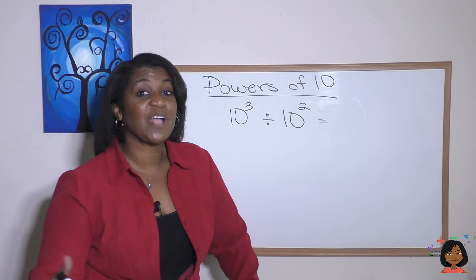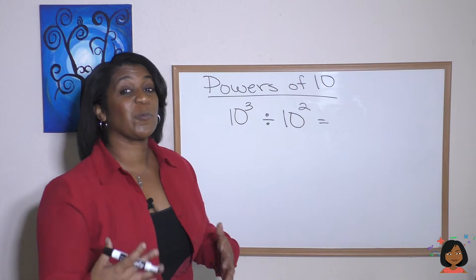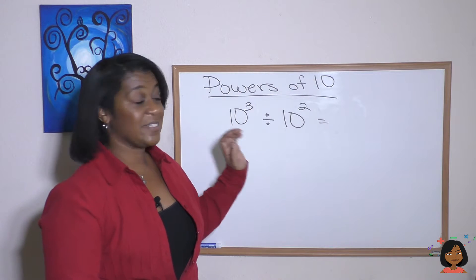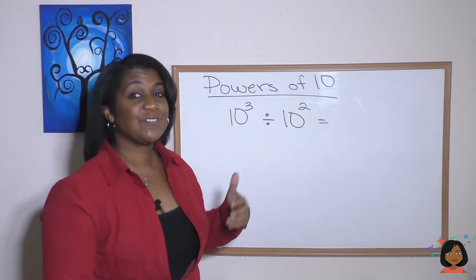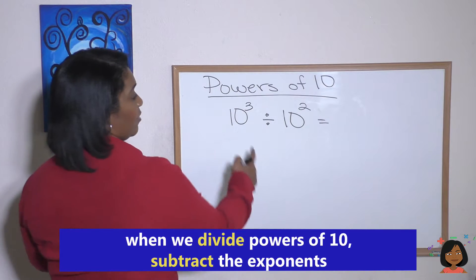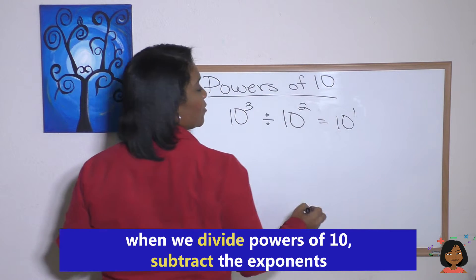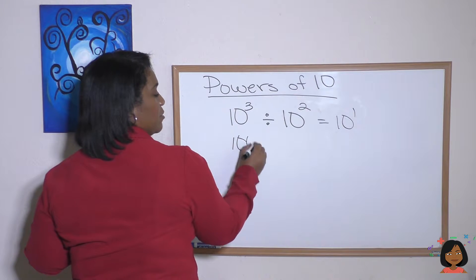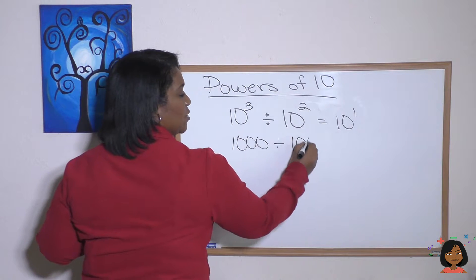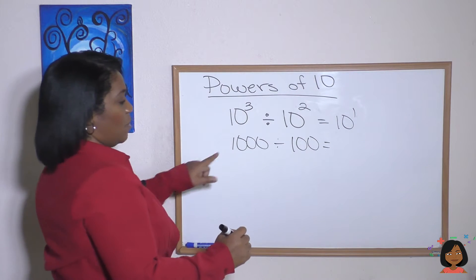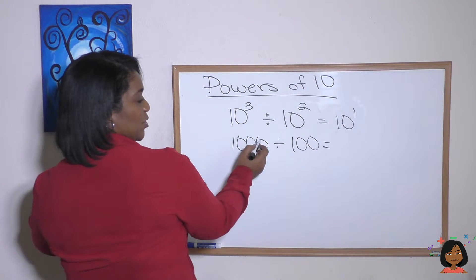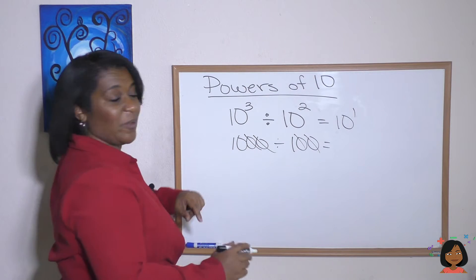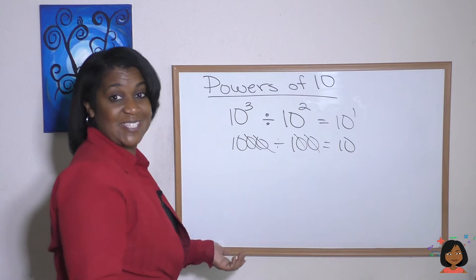It only makes sense that a similar kind of thinking would work for when we're dividing powers of 10. So we're going to divide 10 to the third by 10 to the second. All we have to do is subtract our exponents here. Three minus two is one, 10 to the first power. Let's take a look at what that actually means. So this one has three zeros divided by two zeros. Well, 1,000 divided by 100. We know we can just cross out zeros to see what's left. It means that all we have left is 10 and 10 to the first is 10.